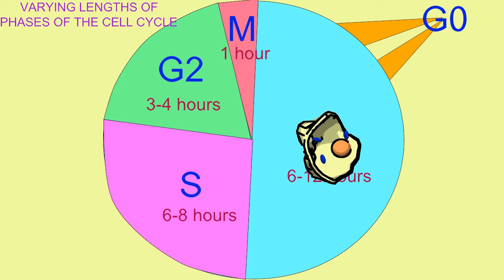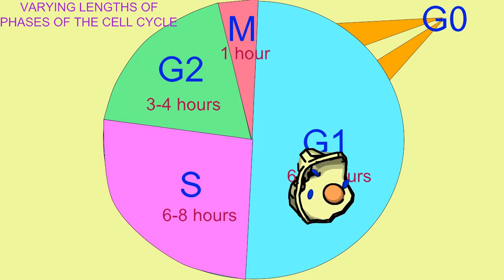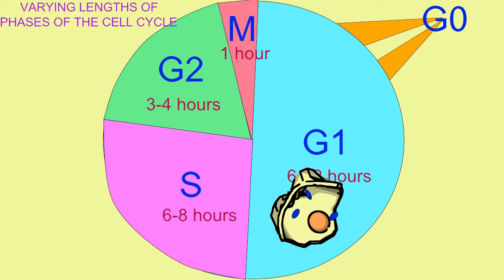But in many cells, G1, the period of the most active growth, may occur in 6 to 12 hours.